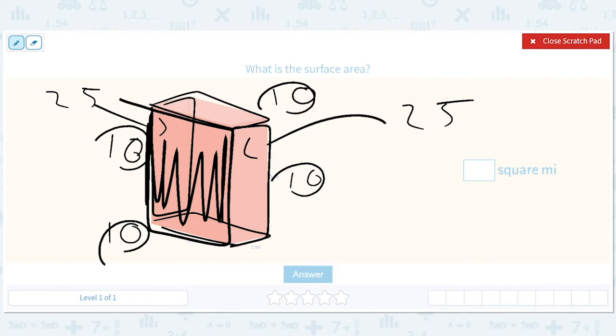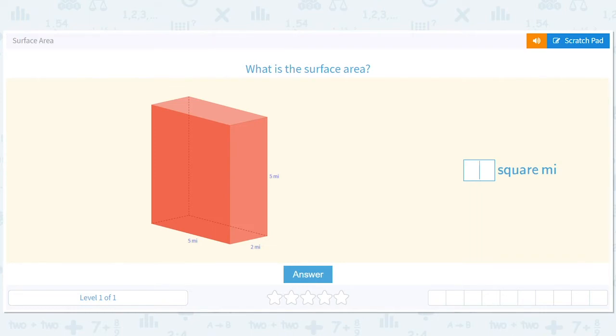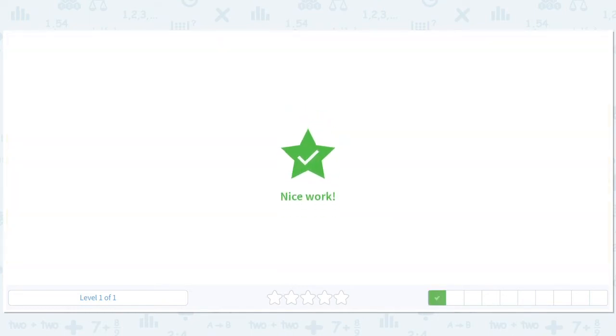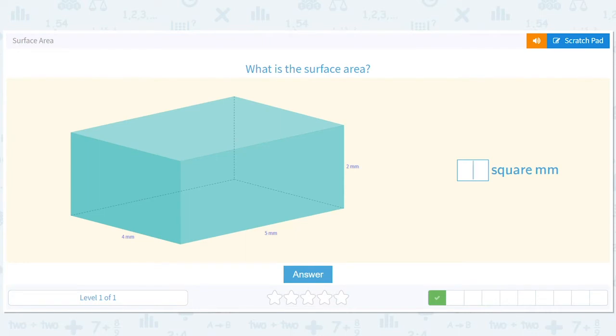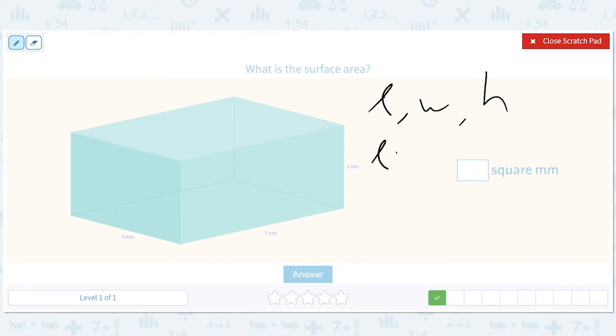So what's a shortcut here? The shortcut is to say, you know what, we have a length, a width, and a height. We're gonna have length times width, length times height, width times height.